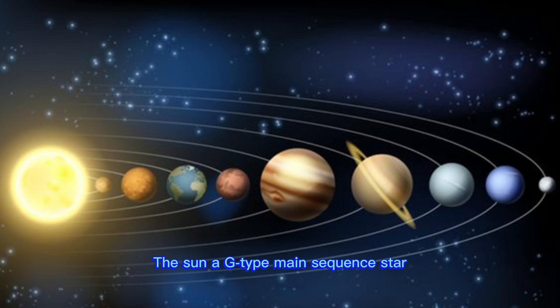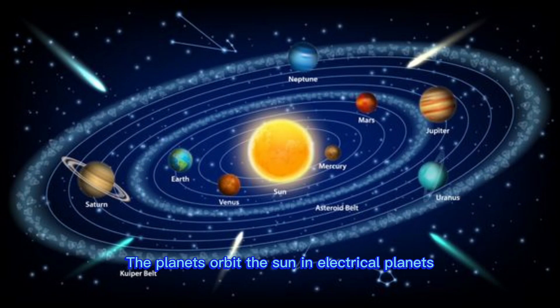The sun, a g-type main sequence star, is the anchor of the system, holding other bodies in orbit with its gravitational pull.